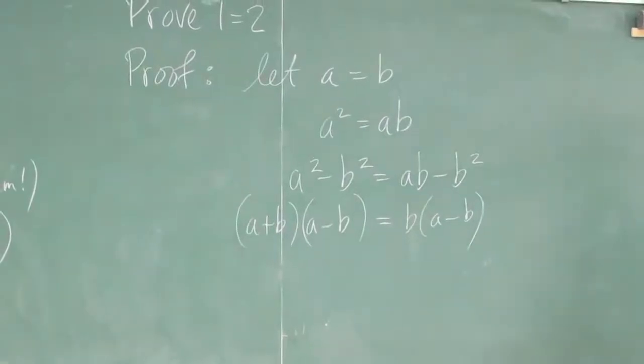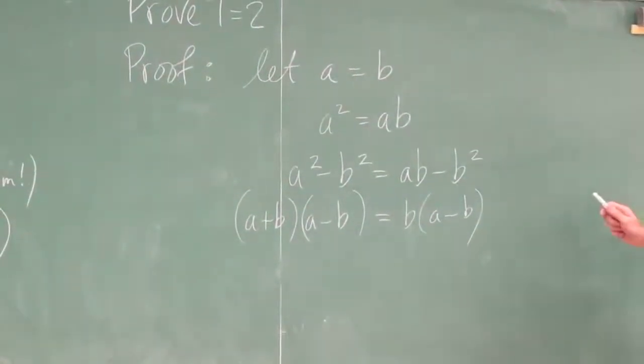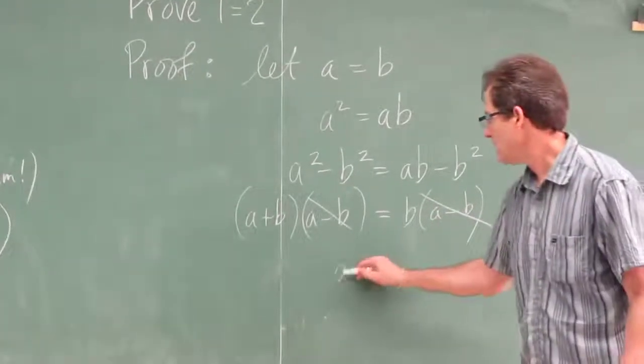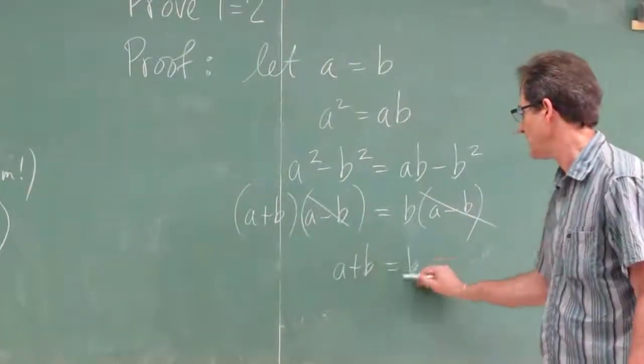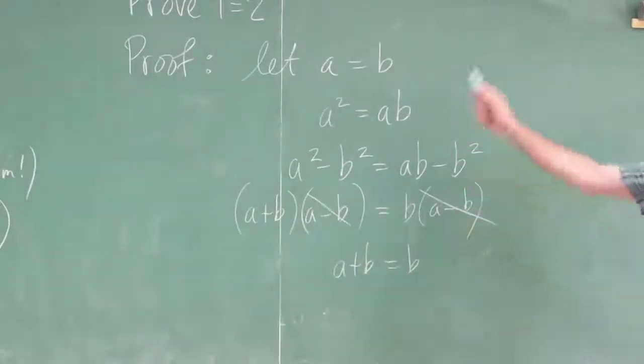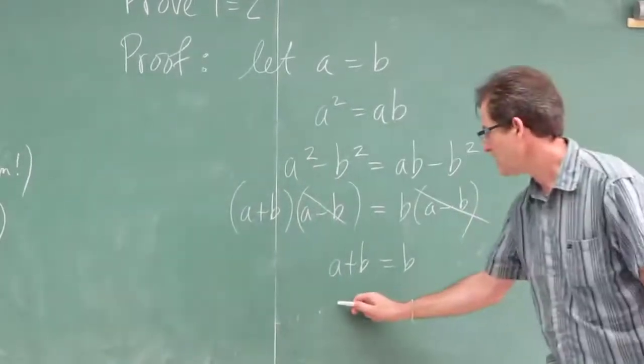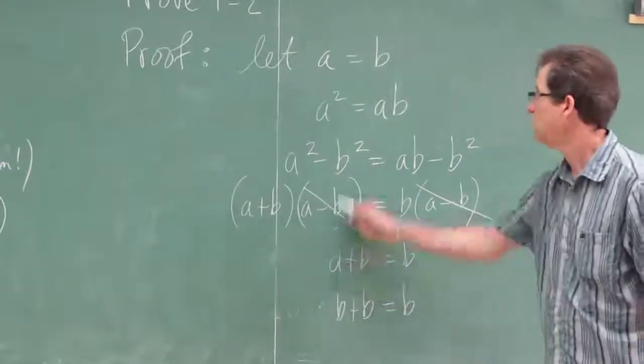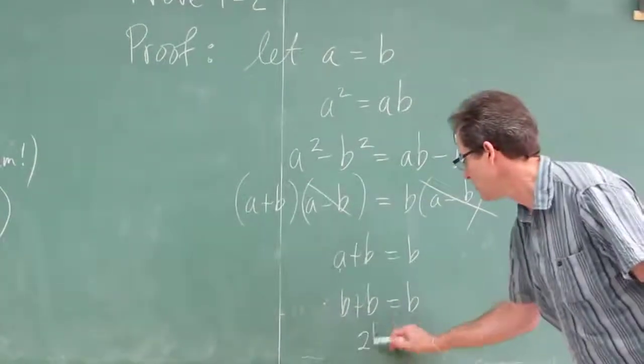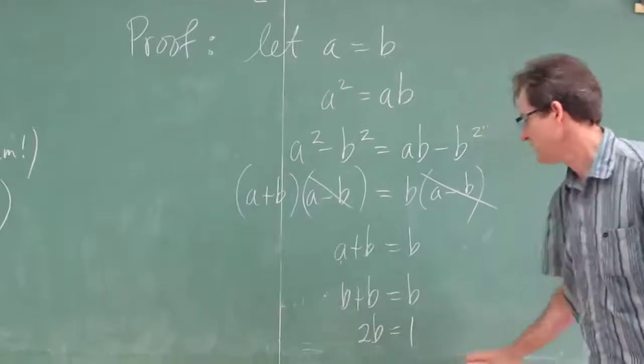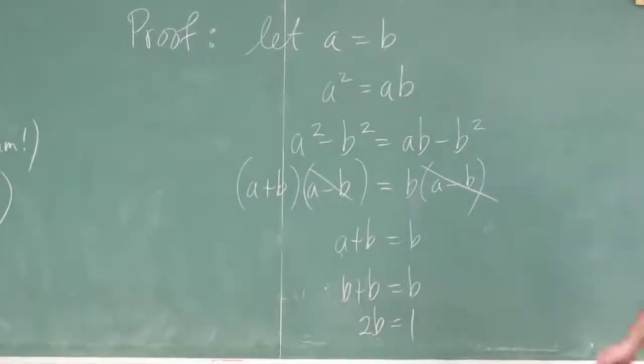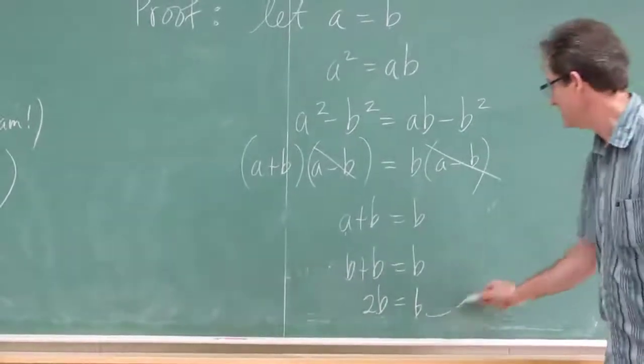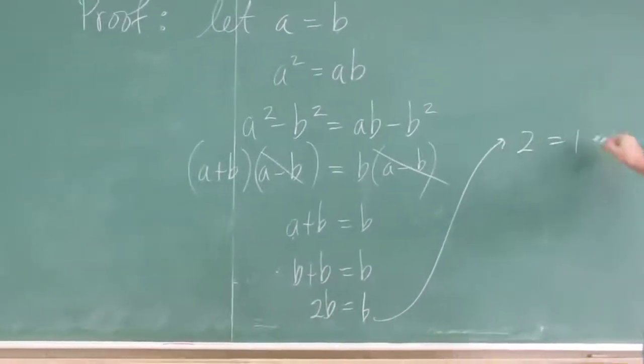Now, we're drawing down before you say anything. At this point, I can divide both sides by a minus b. I can just cancel a minus b. So I get a plus b equals b. But a is equal to b, so that's the same as b plus b equals b, because a is equal to b. Or 2b equals b. Divide both sides by b, and 2 equals 1.